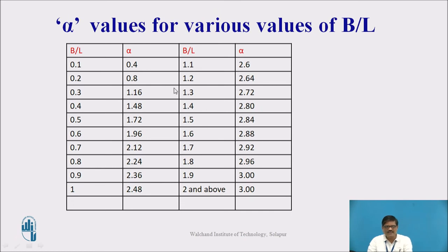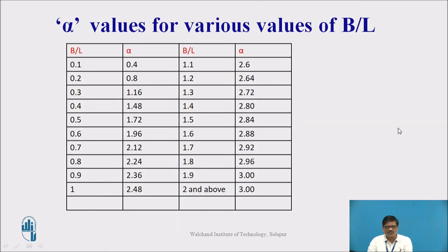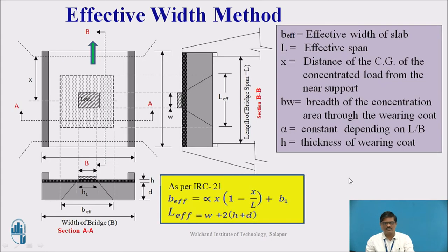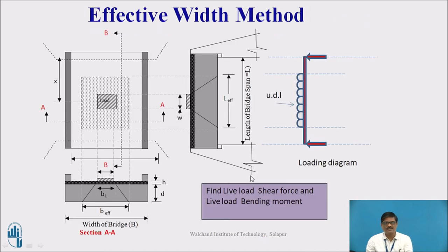These are the values of alpha as we discussed in the previous slide. Alpha is required and this alpha is based on the ratio of L by B. For different values of L by B, the alpha is given. Here it is 0.4, 0.8 like this, these particular ratios you can see.